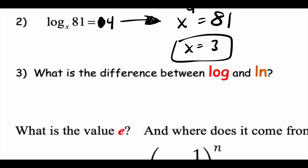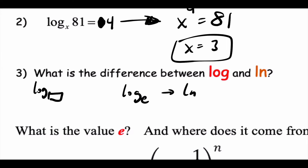The N in LN means natural. I don't know why it's LN instead of NL, but that's just the way it is. Log is a log with any base — any number there. Natural log has to have E as a base. So instead of writing E as a base every time, they just change it to natural log.